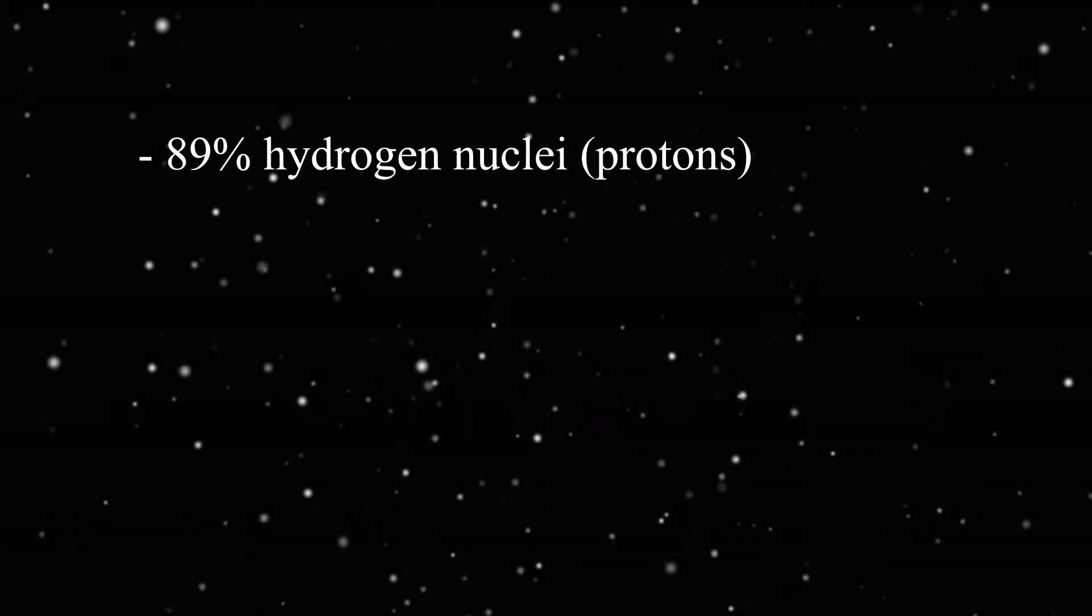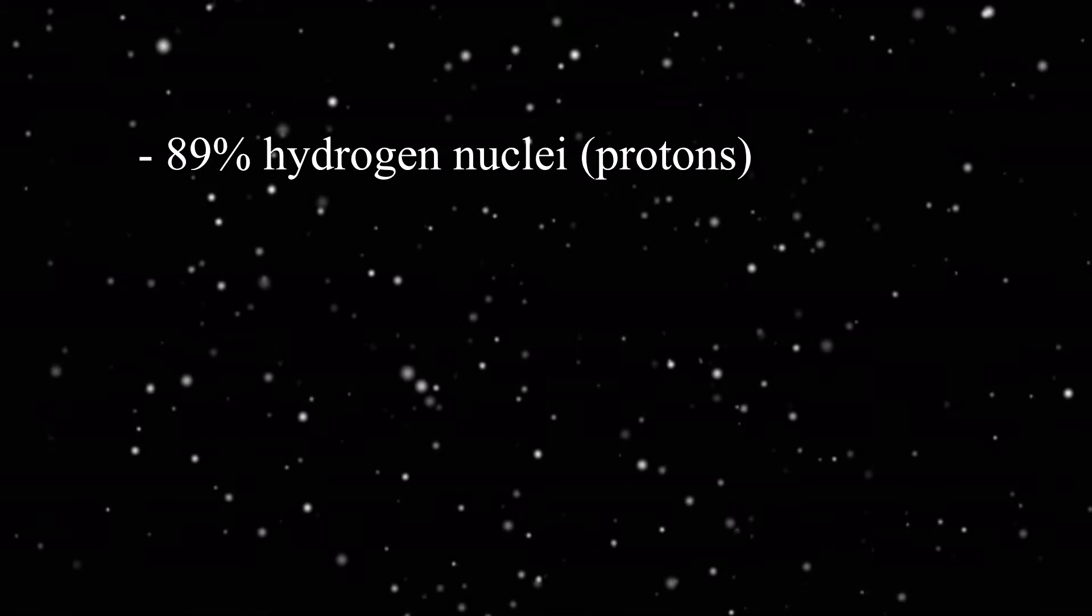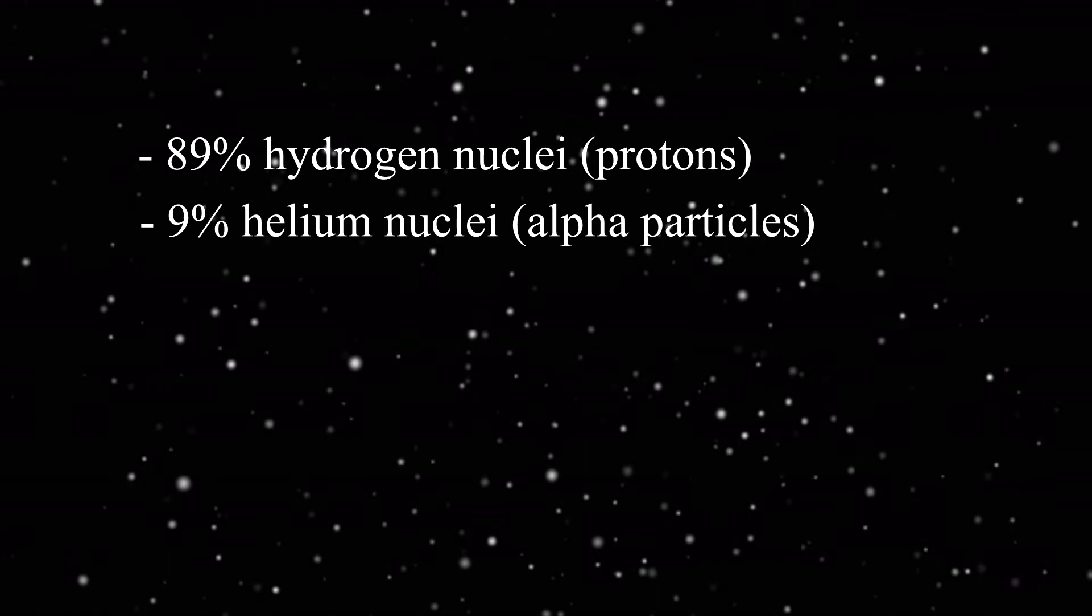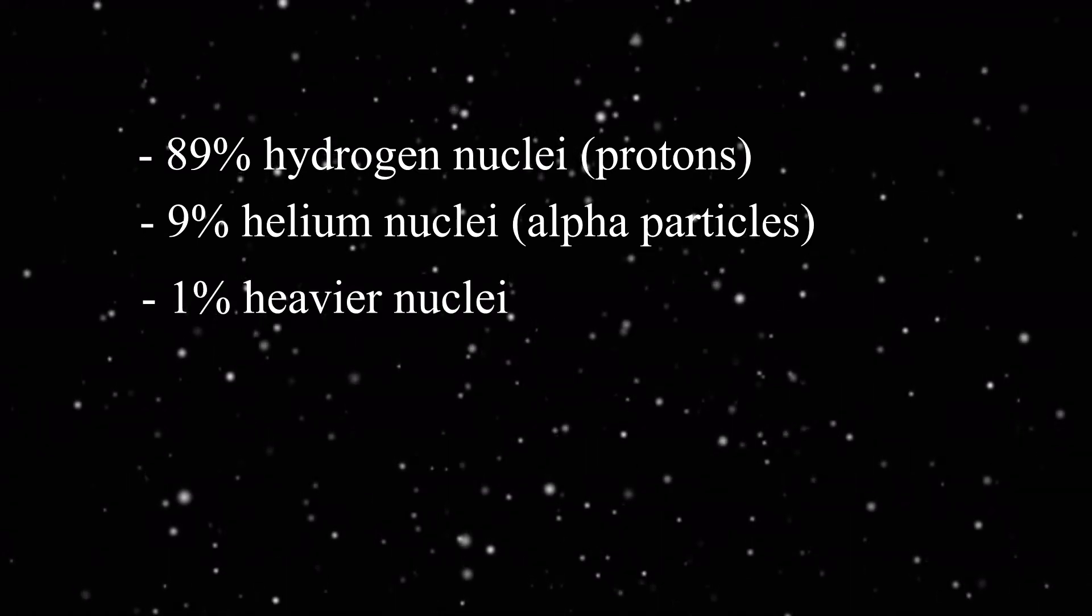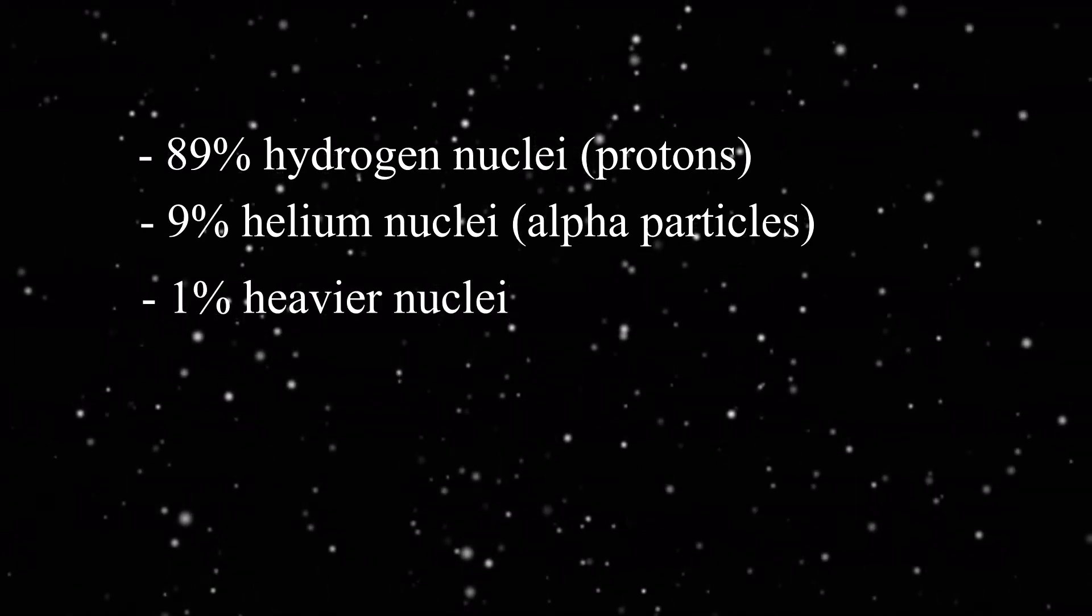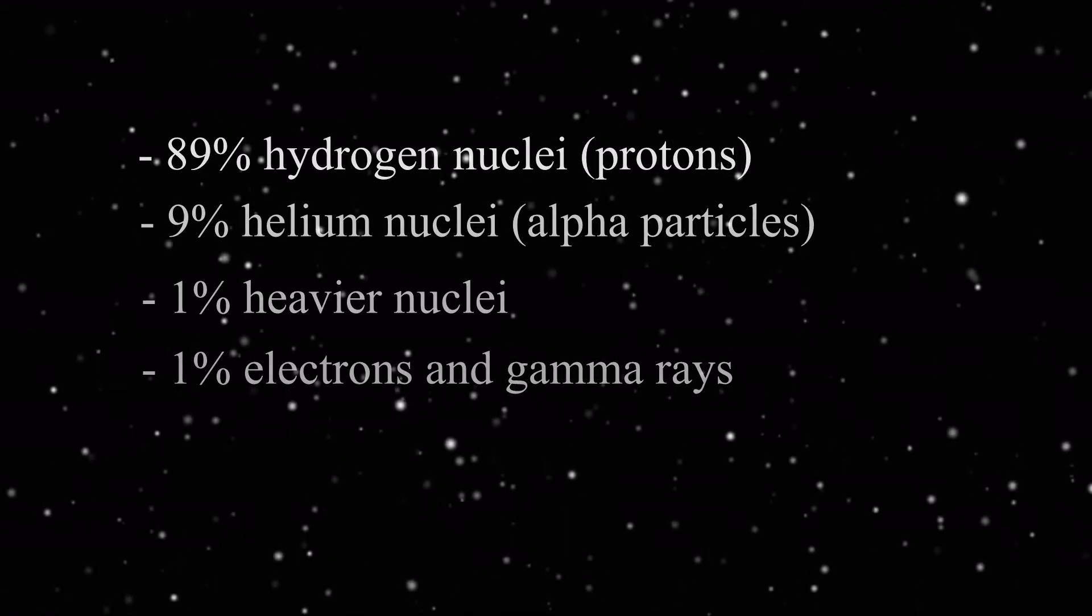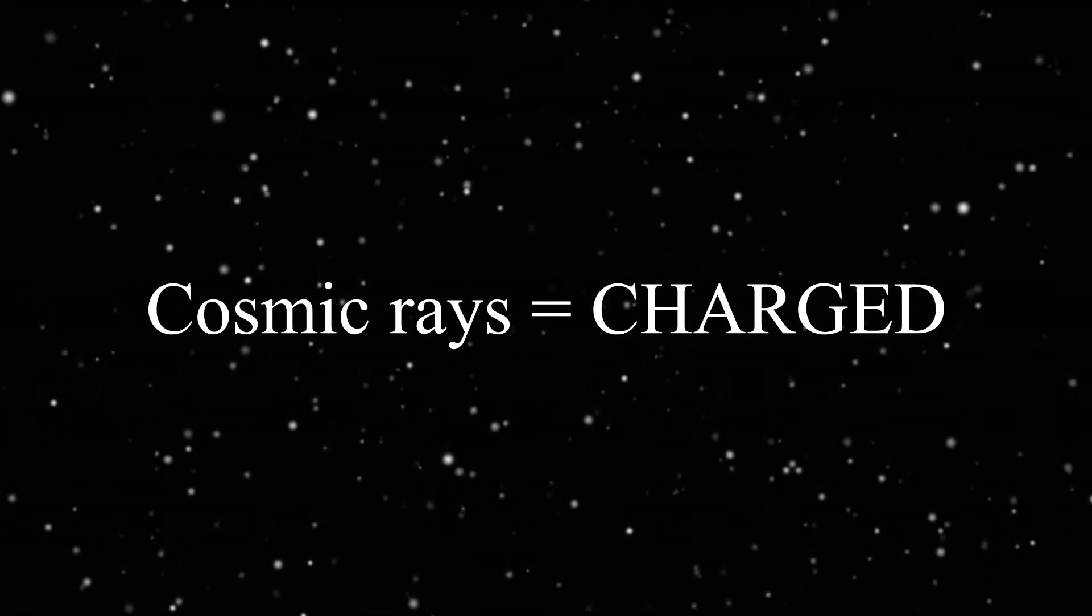Cosmic rays are composed of 89% hydrogen nuclei, these are protons, 9% helium nuclei, these are alpha particles, 1% heavier nuclei, and 1% electrons and gamma rays. From this, it can be said that cosmic rays are charged particles.